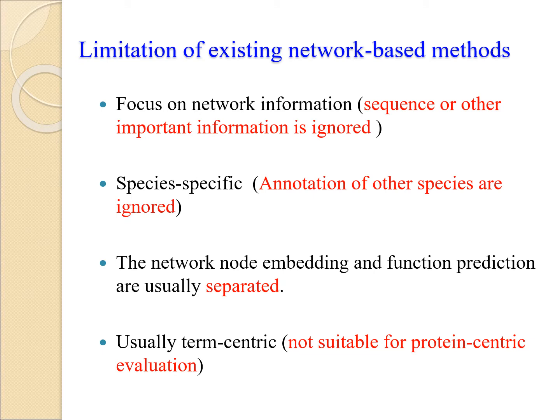There are several limitations of existing network-based methods. Almost all network-based methods focus only on network information and totally ignore other important information such as protein sequence. All these methods are species-specific, training an independent single model for each species. In addition, the network node embedding and function prediction are usually two separated stages. Furthermore, these methods usually only use term-centric evaluation.